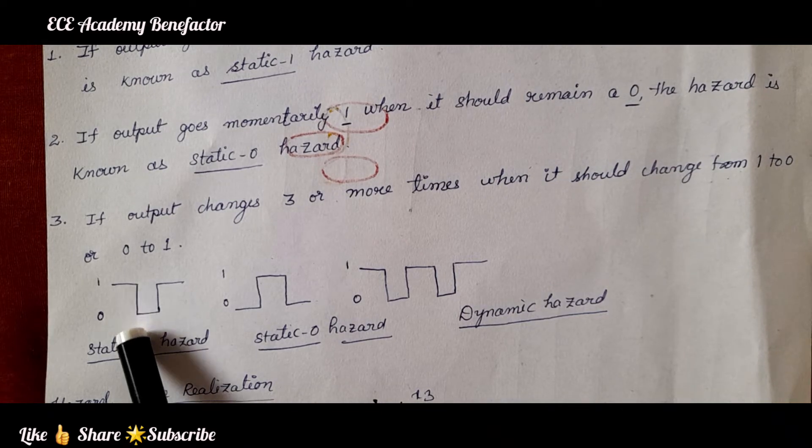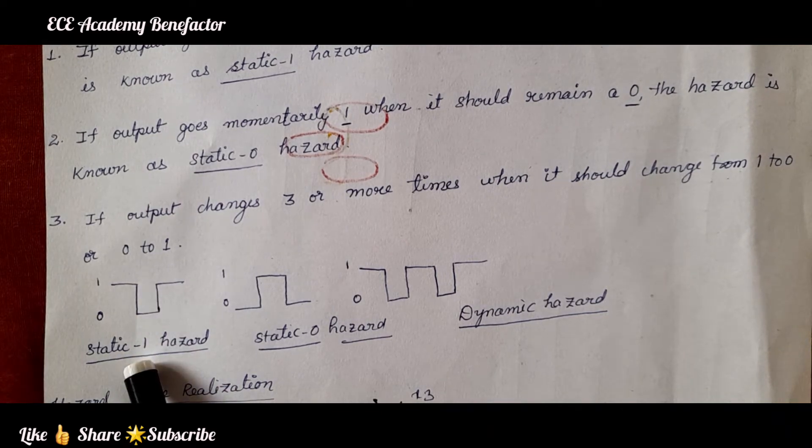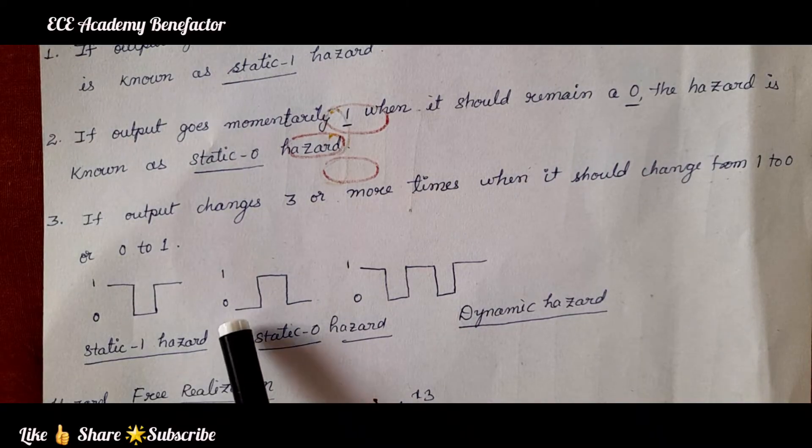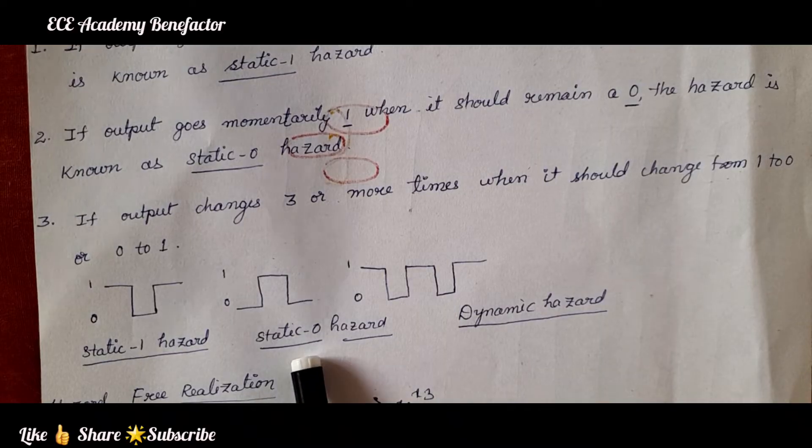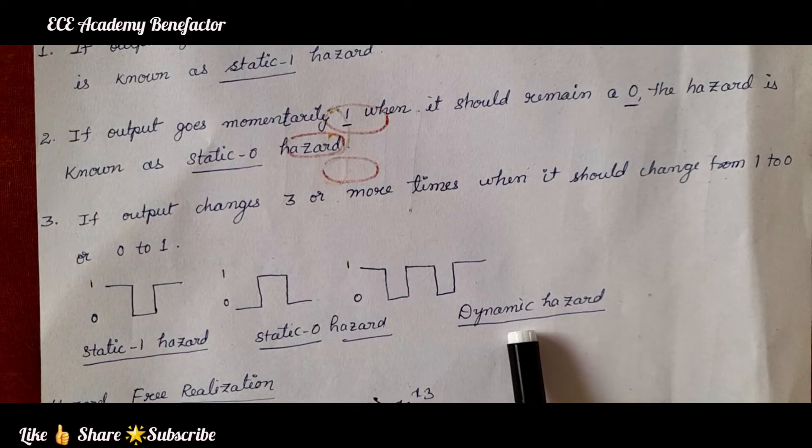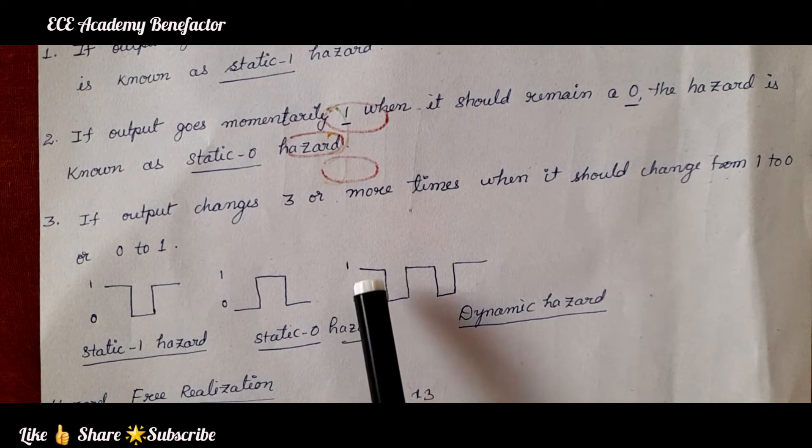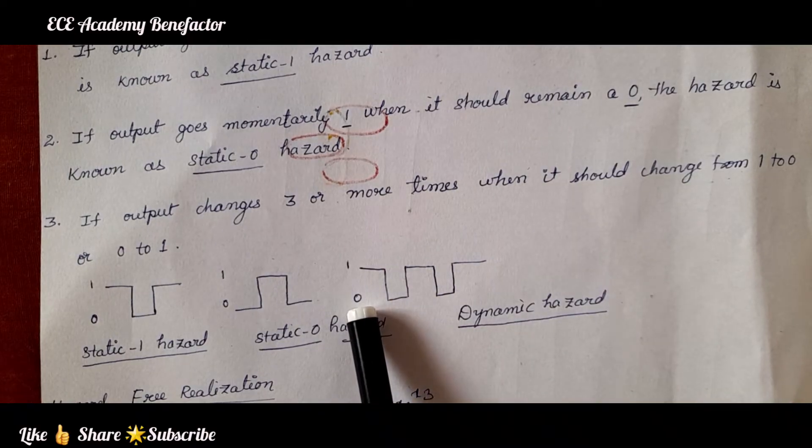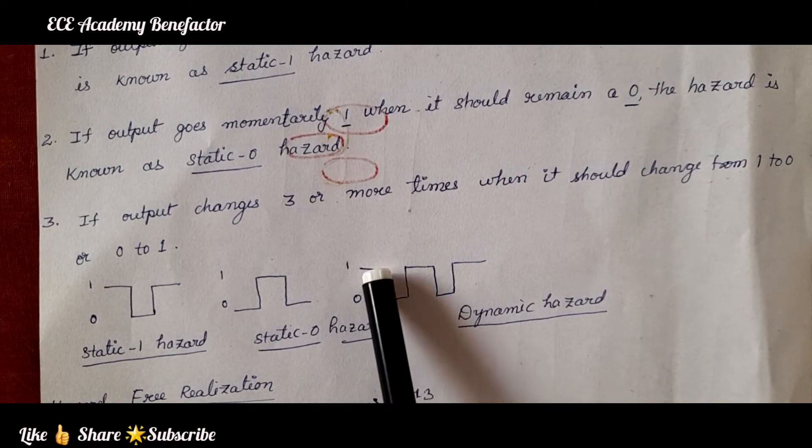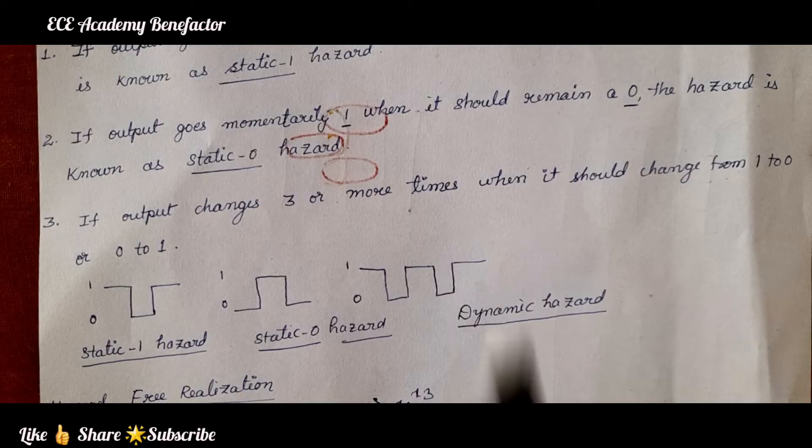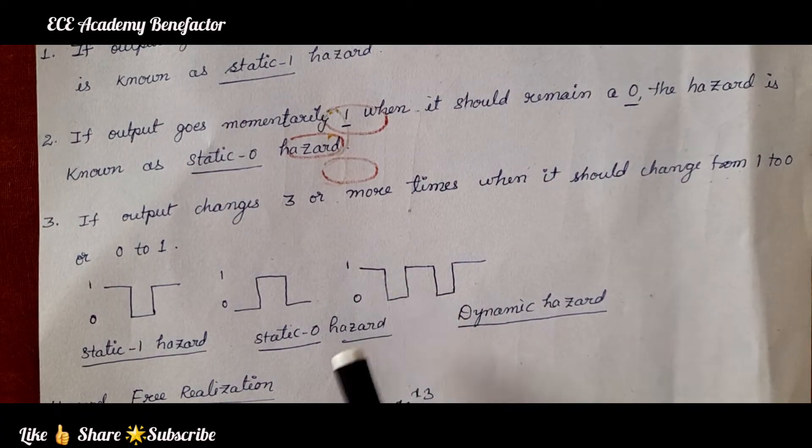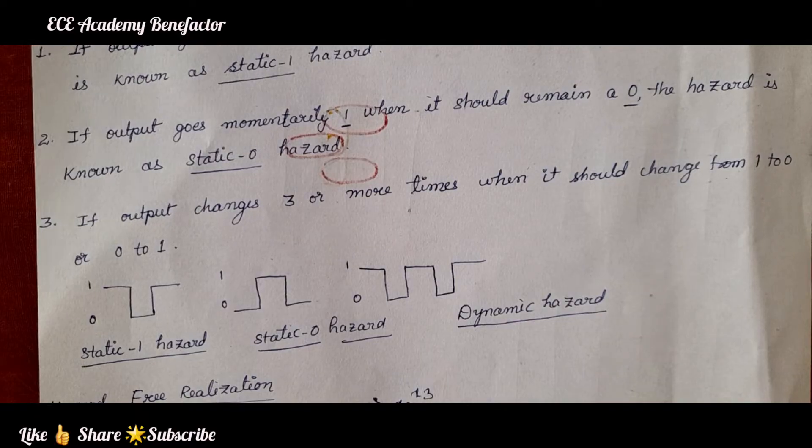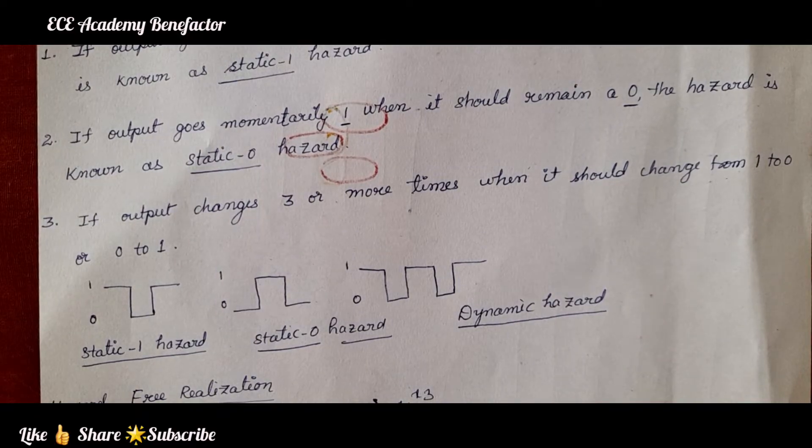Static 0 means the output is supposed to be 0, but it is momentarily changing to 1. So, it is a static 0 hazard. Dynamic hazard, when the output is changing from 1 to 0 or 0 to 1, but it is changing number of times. It should have this transition only one time, but it is occurring more than 3 or more times. And we say it is a dynamic hazard.